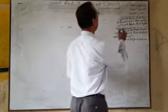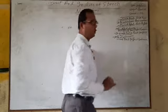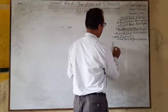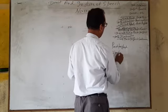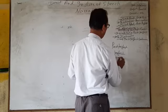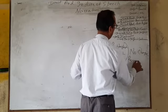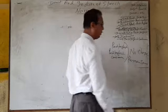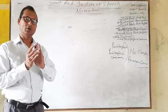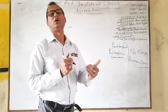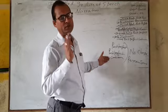So we have seen: simple present, present continuous, present perfect, present perfect continuous, simple past, and past continuous — all with their changes. The remaining two: past perfect or past perfect continuous — no change; they remain the same. If the reporting verb is past and the reported speech is either in past perfect or past perfect continuous, there will be no change.